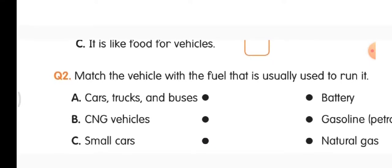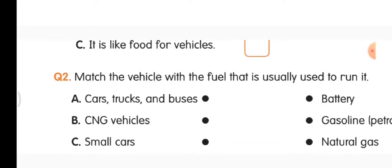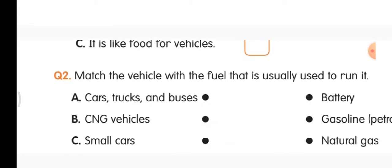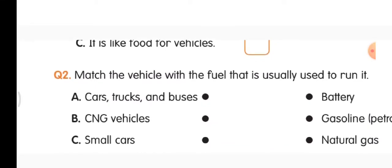Second question: match the vehicle with the fuel that is usually used to run it. On the left side we have vehicles, on the right side we have fuels. Cars, trucks, and buses use gasoline — that means petrol — so match accordingly. CNG vehicles use natural gas, so match with natural gas.